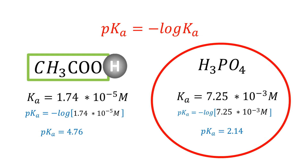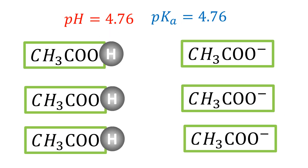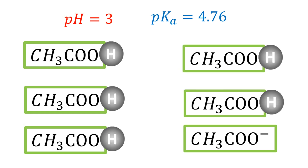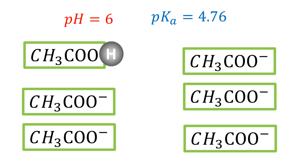An interesting scenario is when an acidic solution has a pH equal to the pKa of the acid. In this case, the amount of acid in the solution is equal to the amount of its conjugate base. If the pH of the solution is lower than the pKa, then the amount of acid is higher. The opposite is also true: if the pH is higher than the pKa, the amount of conjugate base will be higher.